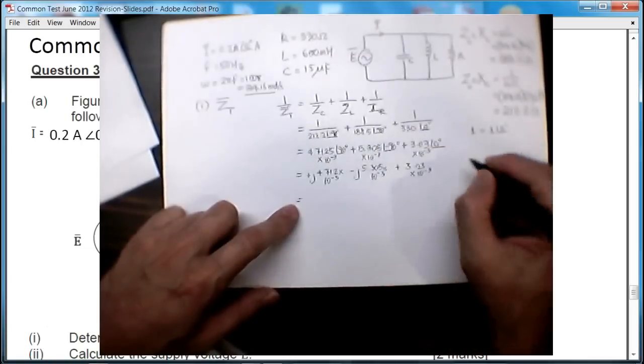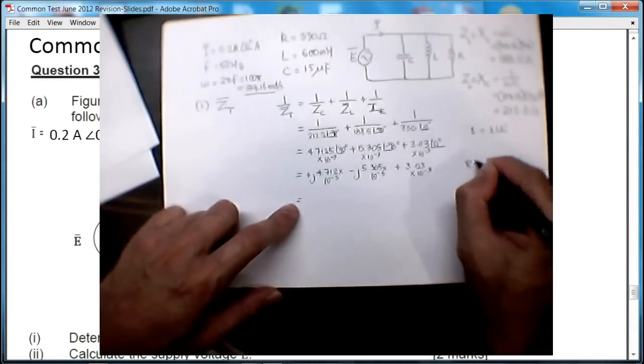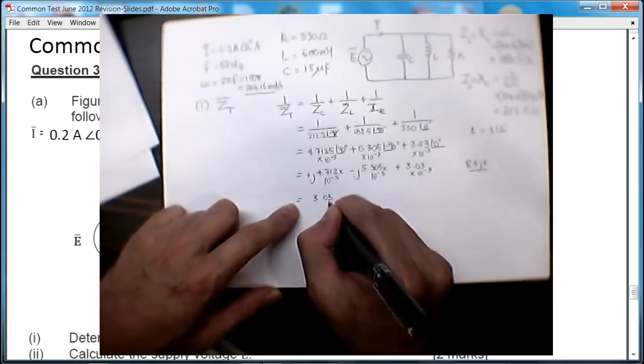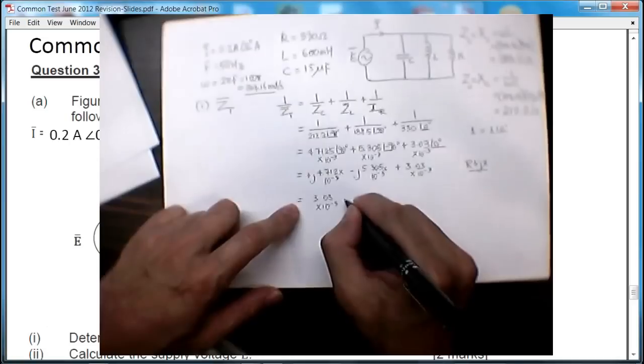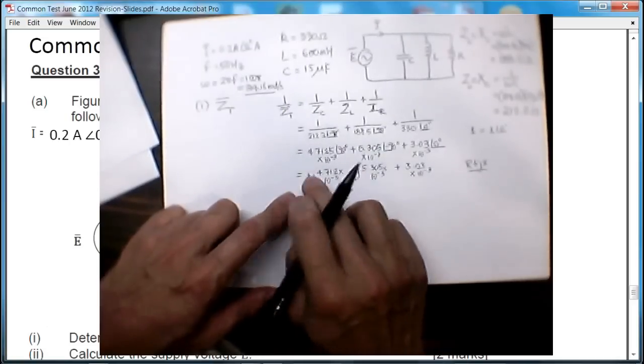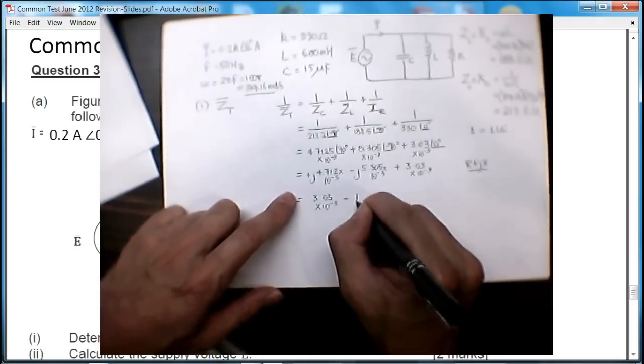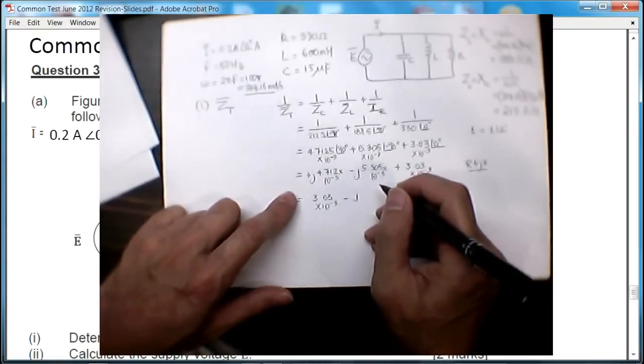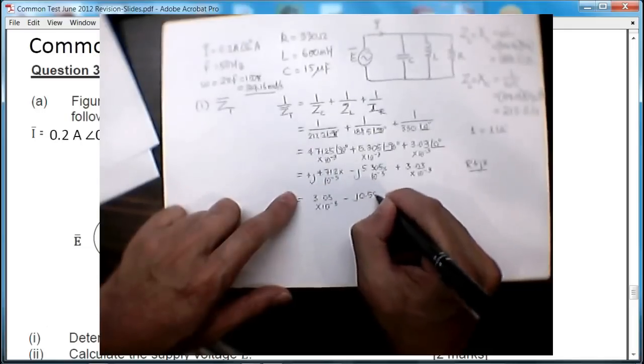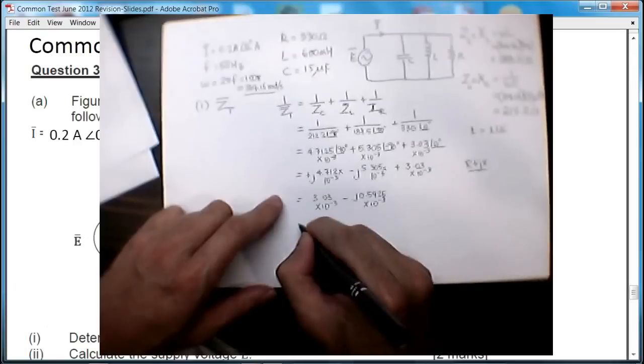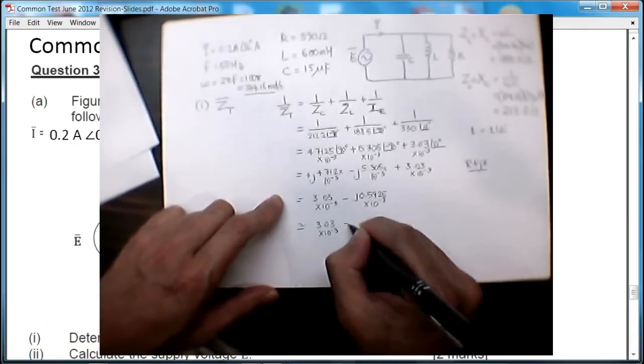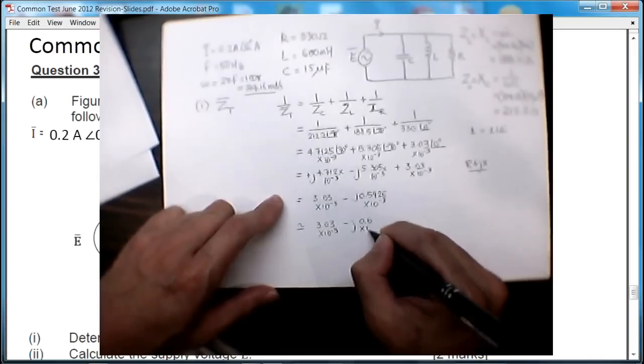That gives me, if I were to rearrange it into the normal rectangular format—remember, rectangular format is r plus jx—so I would have 3.03 times 10^-3 minus j 0.5925 times 10^-3. That's approximately 3.03 times 10^-3 minus j 0.6 times 10^-3.